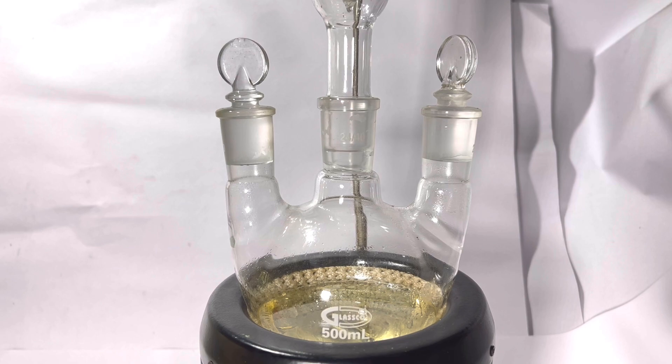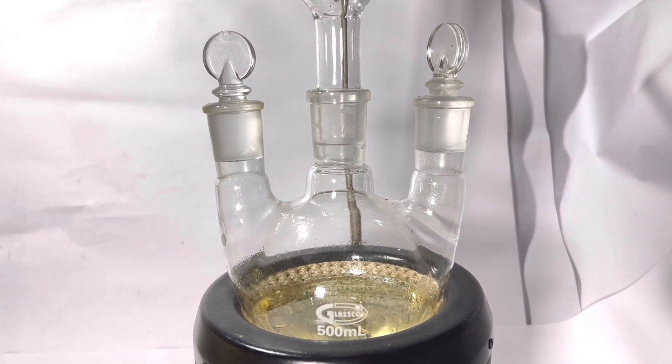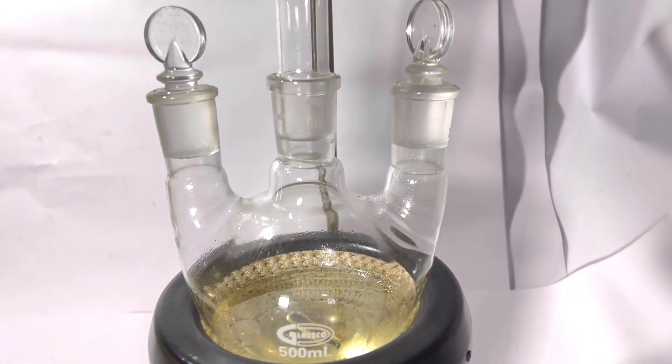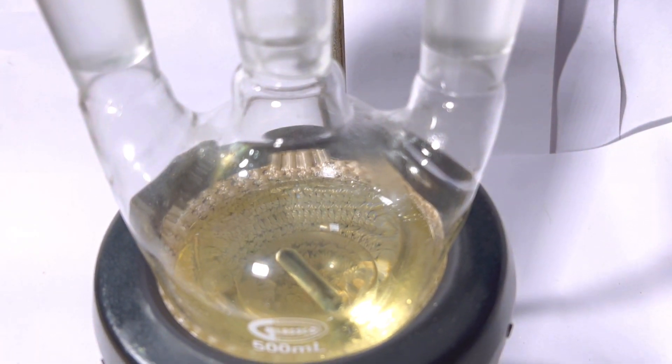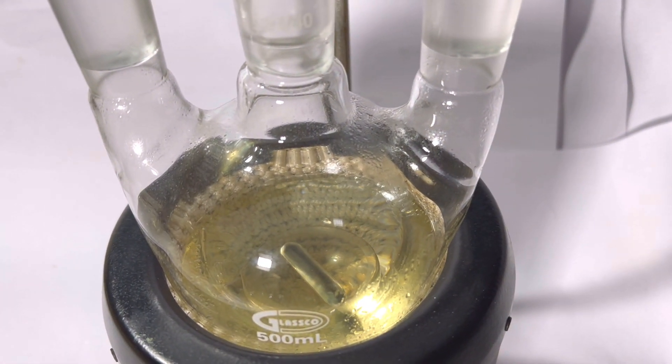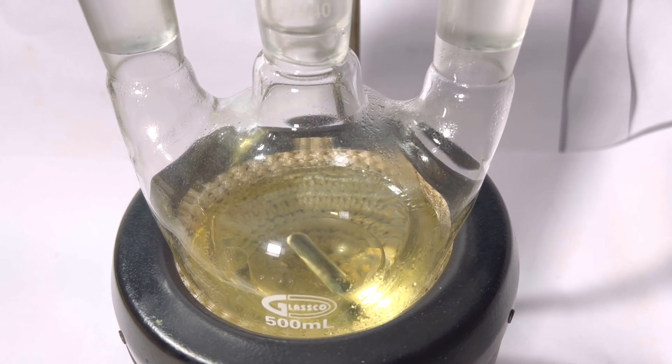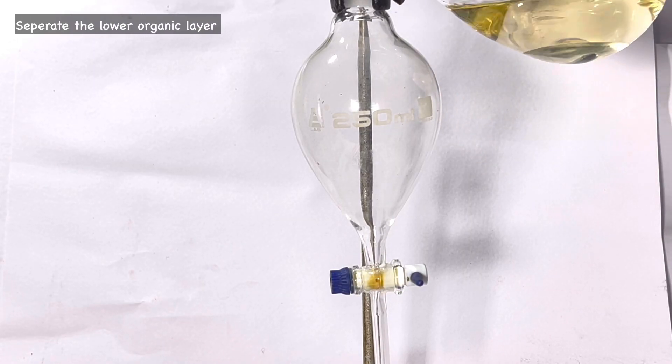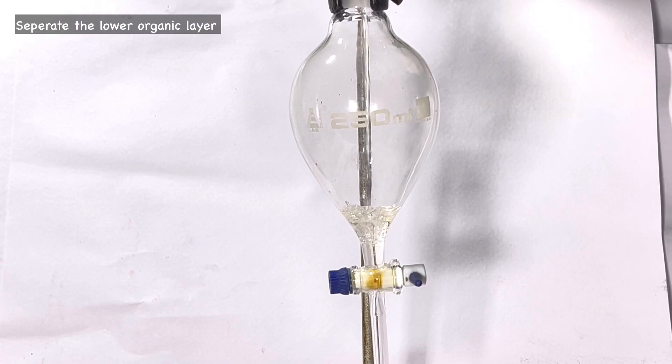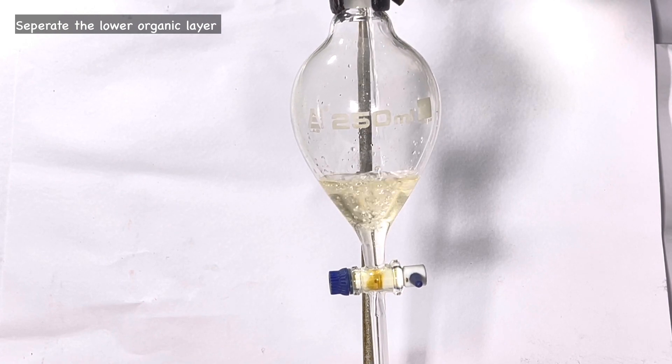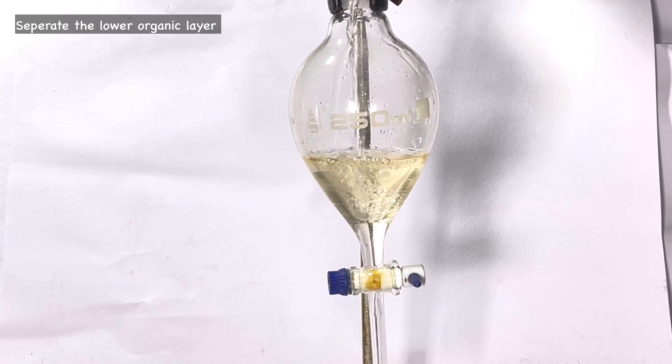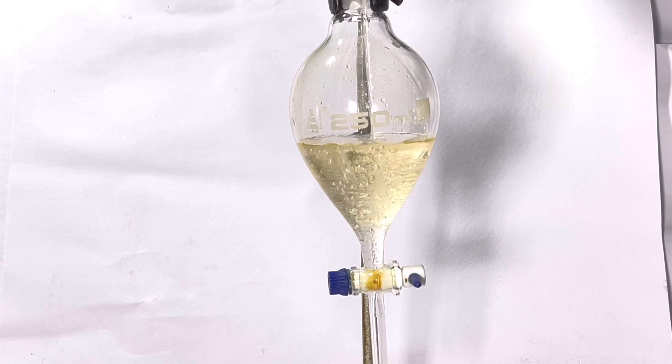After 5 hours of reflux, it was stopped and contents of the flask was allowed to cool down to room temperature. You can already see the layers here getting separated. Next the contents of the flask was transferred to a separatory funnel. The bulky dibromobutane layer collects at the bottom and the aqueous layer on top. The lower dibromobutane was then collected.